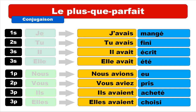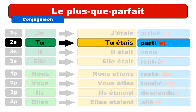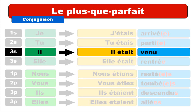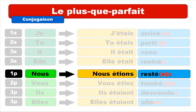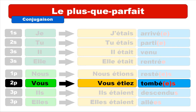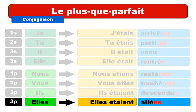Second group — a few examples with être: j'étais arrivé, tu étais parti, il était venu, elle était rentrée, nous étions restés, vous étiez tombés, ils étaient descendus, elles étaient allées.